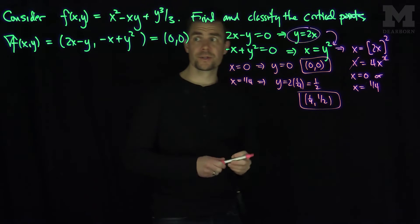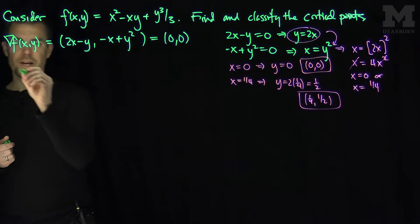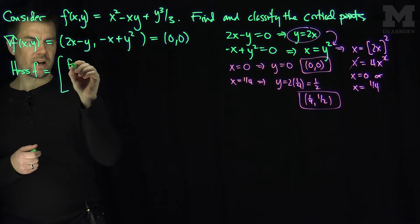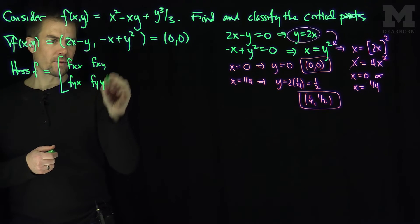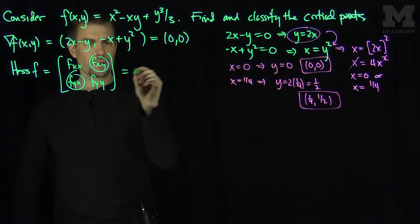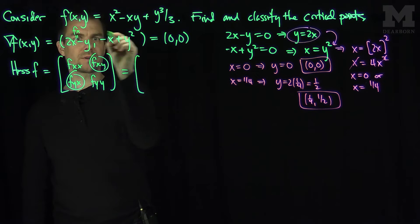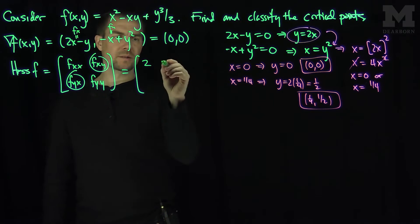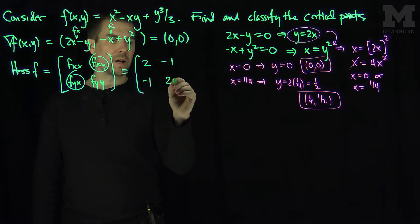Now we need to classify these critical points. To do so, we compute the Hessian of f, which is the matrix of second derivatives: f_xx, f_xy, f_yx, f_yy. The off-diagonal terms are equal by equality of mixed partials. So f_xx = 2, f_xy = -1, f_yx = -1, and f_yy = 2y.